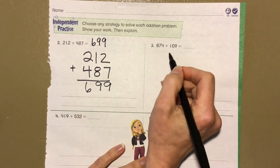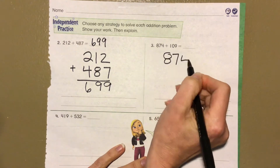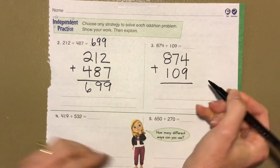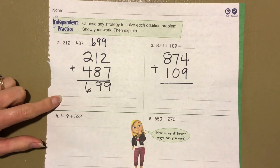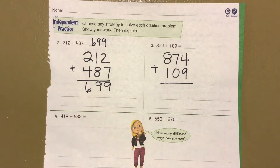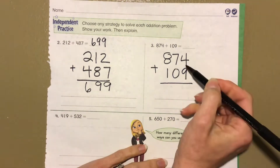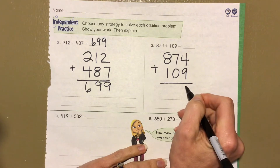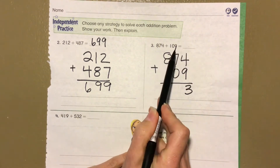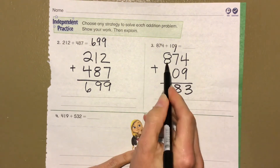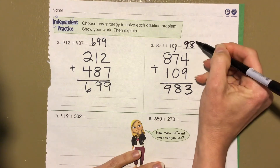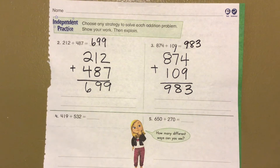Number 3: 874 plus 109. I'll have you explain your strategy to me rather than write it. 4 plus 9 is 13 — regroup, put 3 here, carry that one bundle of tens. 1 plus 7 is 8, and 8 plus 1 is 9. Sum is 983.